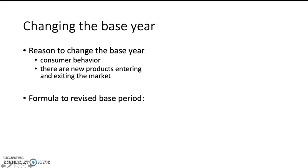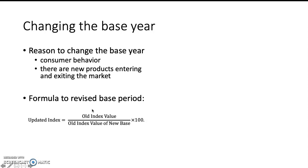It is fairly simple to revise the base period of an index. We basically transform the index of the newly chosen base period to 100, and values in other periods are adjusted by the same proportion. By formula, if you want to change the index of a specific year, you put the current index value in the numerator and the old index value of the new base year in the denominator.